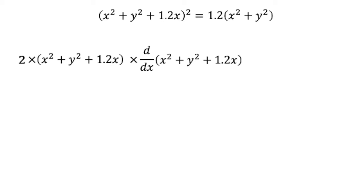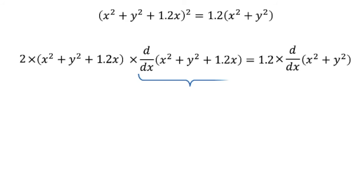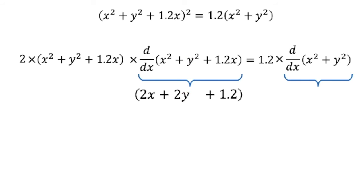On the right-hand side of the equation, the derivative will be the coefficient, which is 1.2, multiplied by the derivative of x squared plus y squared. The derivative of x squared is just 2x, and the derivative of 1.2x is just 1.2. We are treating y as a function of x, even though we do not have a formula for it, so we are thinking of it as some f of x that is being squared. To compute the derivative, we will need to use the chain rule, which gives us 2x plus 2y times y prime as the derivative of the right-hand side.